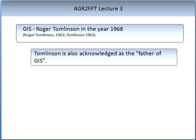Dr. Rob Tomlinson was a Canadian scientist who published a paper in 1962 on an introduction to the use of electronic computers in the storage, computation, and assessment of natural and economic data for the evaluation of marginal lands. This paper started work on GIS funded by the Government of Canada. This work resulted in a second publication in 1963 — a feasibility report of computer mapping systems — based around the Agricultural Rehabilitation and Development Administration area. These two papers, coupled together, were thought of as the birth of GIS.